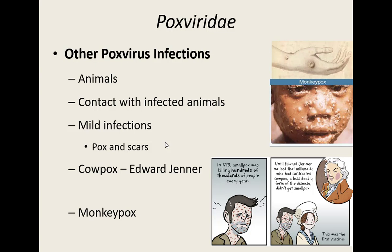The other pox viruses out there are generally animal viruses — zoonotic diseases — meaning we can pick up various viruses from different animals if we come into very close, frequent contact with infected animals. They usually cause only mild infection because the virus's main goal is to infect that particular animal, not us. Two of the most common animal pox viruses are cowpox and monkeypox.